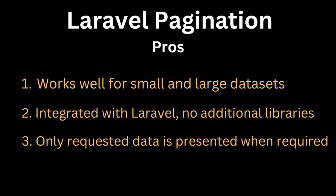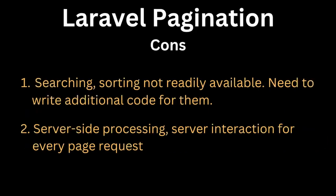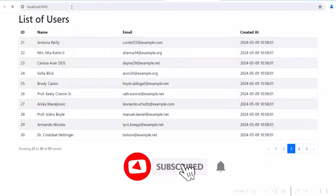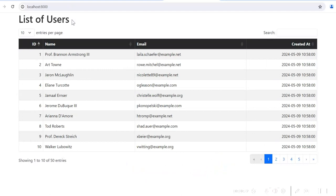On the other hand, Laravel pagination works well for both small and large datasets. It is already integrated in Laravel, so you don't need additional libraries. Only the requested data is fetched from the server when you click a page. However, searching and sorting are not readily available — you need to write additional code for them. It uses server-side processing, so there is a server interaction for every page request. For your project, understand the requirement and consider the data volume when choosing between Laravel pagination and jQuery DataTables. For large datasets, choose server-side processing for performance improvement.